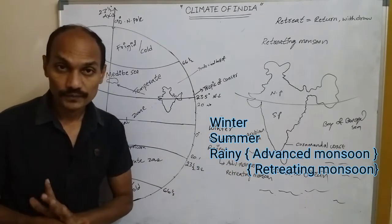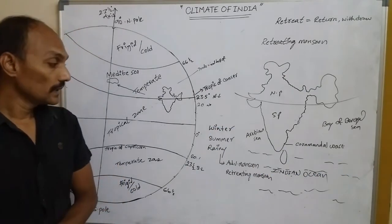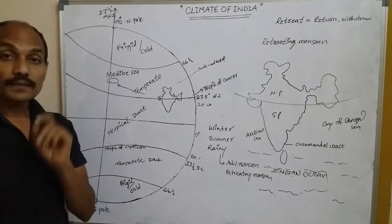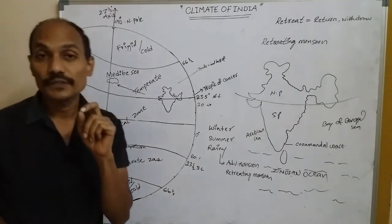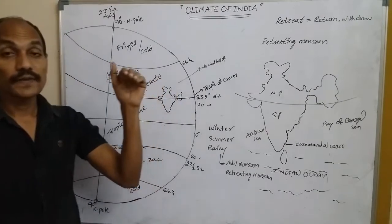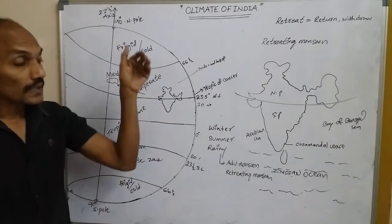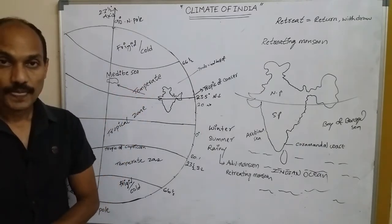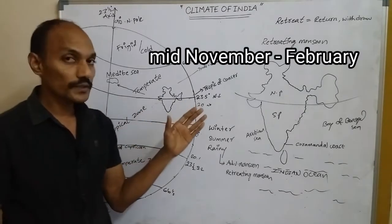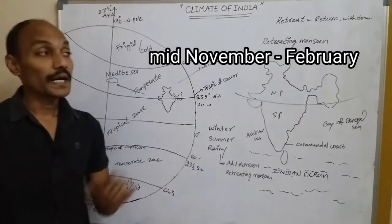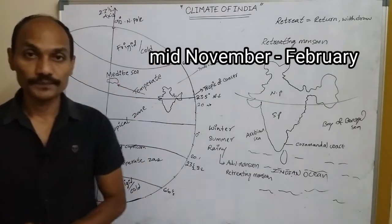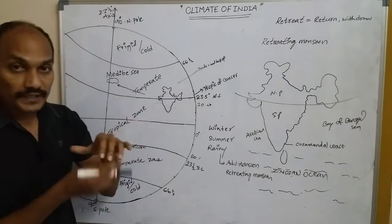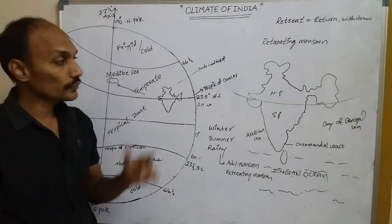Let's first discuss winter. The Indian landmass temperature decreases gradually — that means the temperature comes down slowly by November. The winter season starts from mid-November and continues till February. Let's find out what the temperature is during the winter season in India.